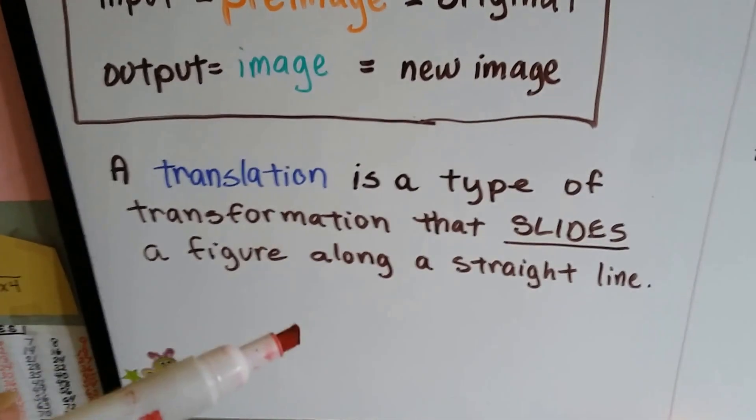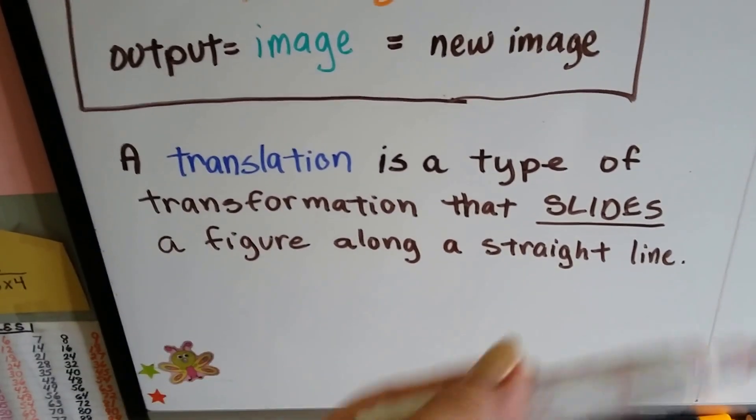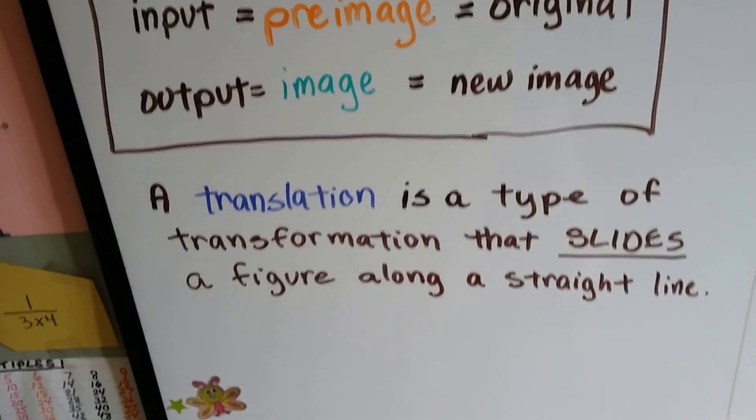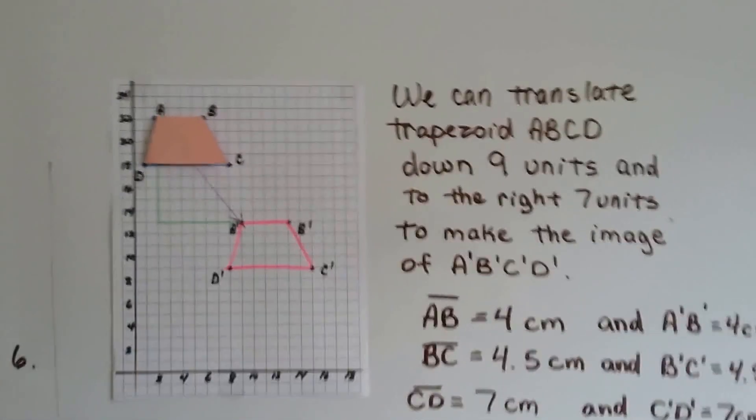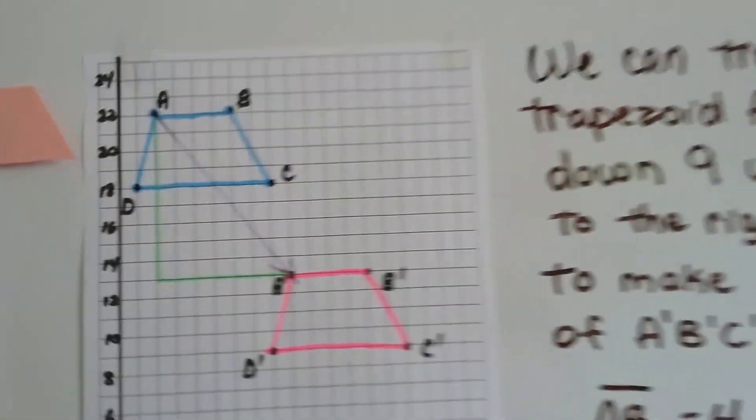A translation is a type of transformation that slides a figure along a straight line. And that's what we're going to talk about. We're going to talk about this trapezoid and how it's going to go through a translation.